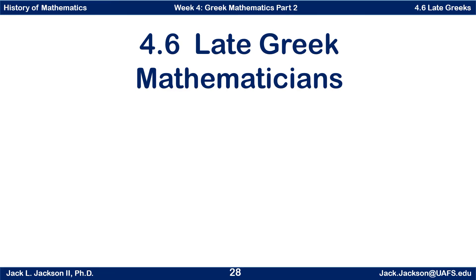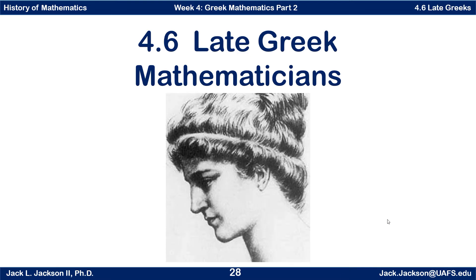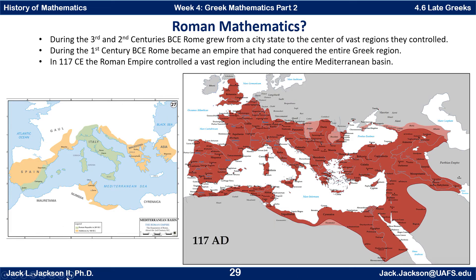Now, let's talk a little bit about some of the later Greek mathematicians. Here is a picture of Hypatia — of course an artist rendering of Hypatia — who is one of the mathematicians we're going to be discussing in this video. First, we should talk a little bit about some of the politics and culture that was going on at the time. The Roman Empire had taken over the Greek world by the time we're going to be talking about in this video.